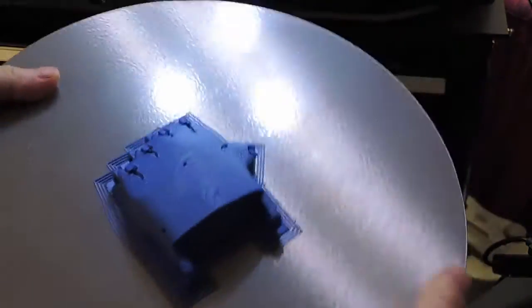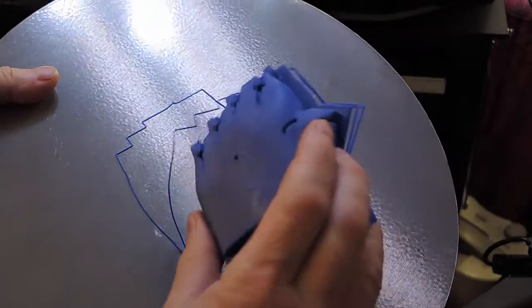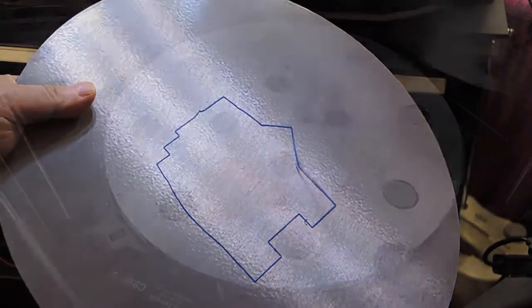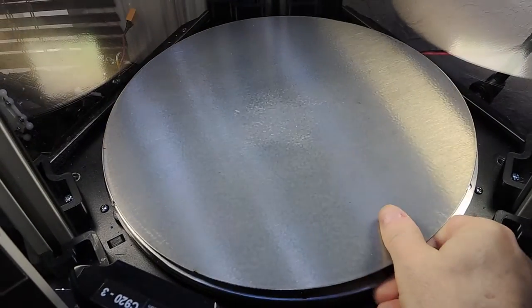The coated build plate is easily removed from the platform and once the plate has cooled a slight flexing of the build plate releases the print. Then the build plate can be returned ready for another print.